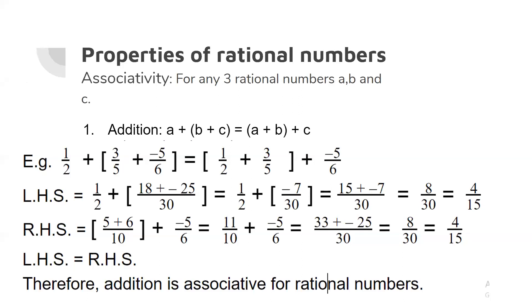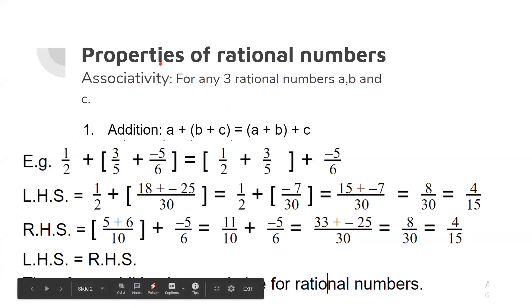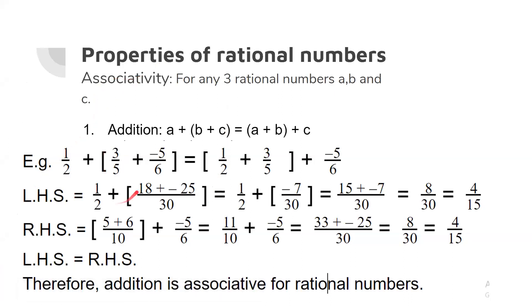For any three rational numbers A, B and C, for addition: A plus (B plus C) is equal to (A plus B) plus C. That is, to find the sum of three rational numbers, either we can take the sum of second and third then add with the first, or we can find the sum of first and second then add with the third. Both cases, we will get the same answer. We can verify it with the help of an example.